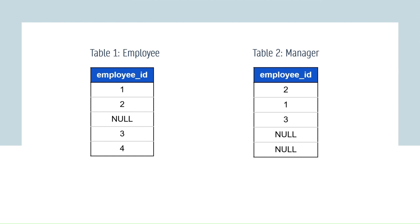These are the two tables we are going to consider. Table one is the employee table and table two is the manager table. Each of these tables contains one column — the employee ID. Since this is the manager table, this is the employee ID of the manager. Now we have to perform various types of joins.